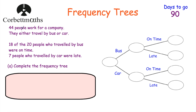So first of all, we're told that 44 people work for the company, so I'm going to put 44 in here. 18 of the 20 people who traveled by bus were on time, so 20 people traveled by bus and 18 were on time. We put 20 there for the bus total and 18 for on time. If 18 were on time, the rest were late - that would be 2. We can check: 18 plus 2 is 20 and 20 of them traveled by bus. Fantastic.